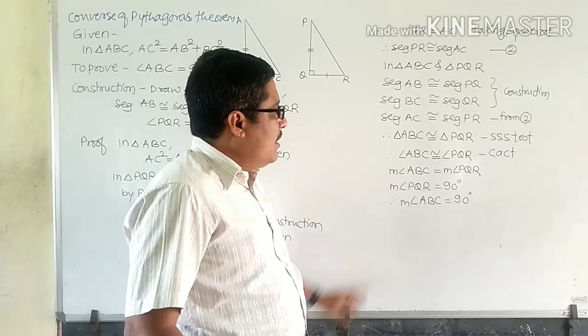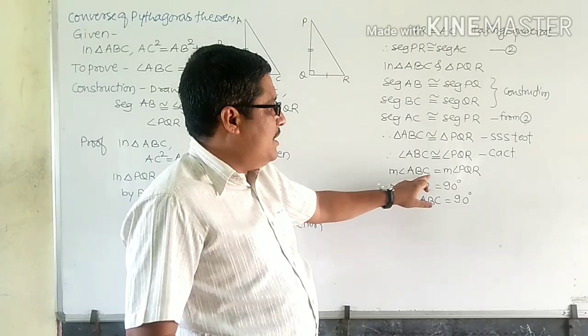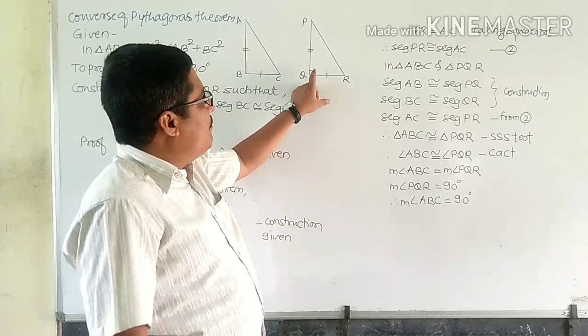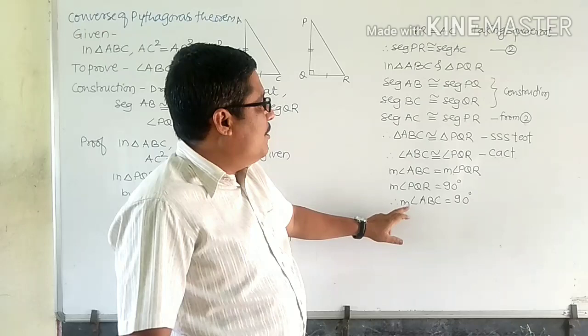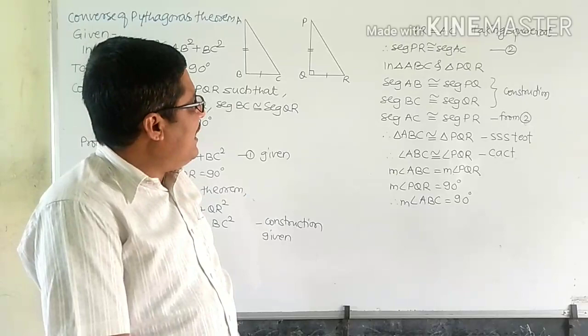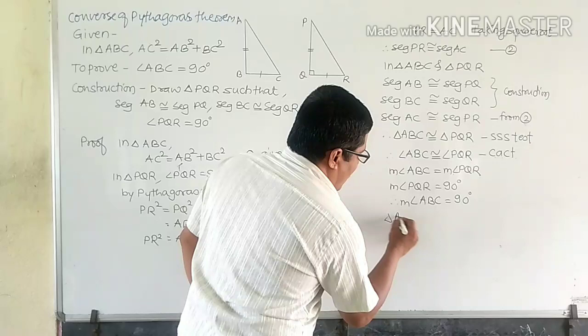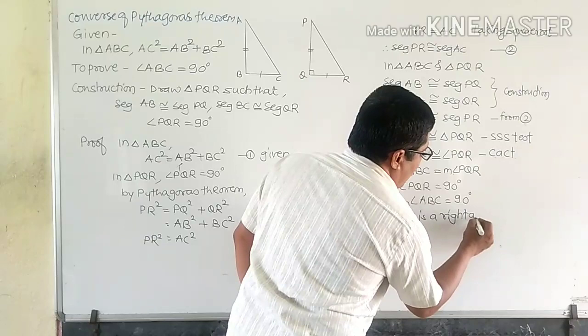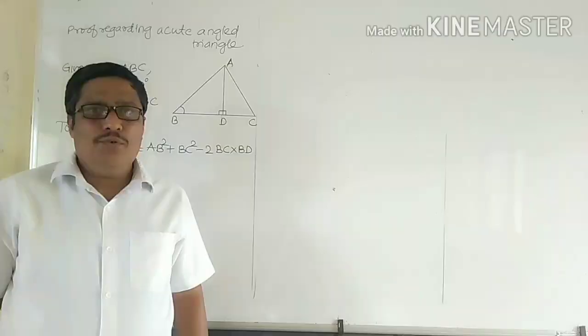Now, if the angles are congruent, that means their measures are equal. Therefore, measure of angle ABC = measure of angle PQR. But measure of angle PQR is 90 degrees, therefore measure of angle ABC is 90 degrees. In this way, triangle ABC is a right angle triangle.